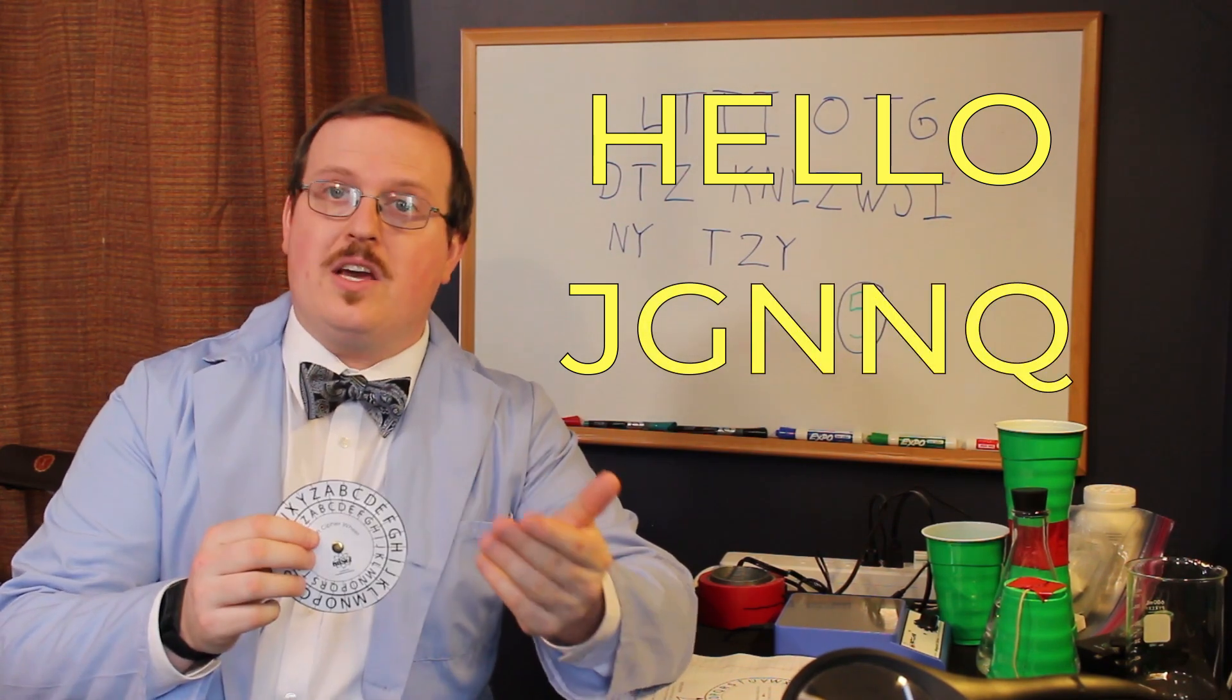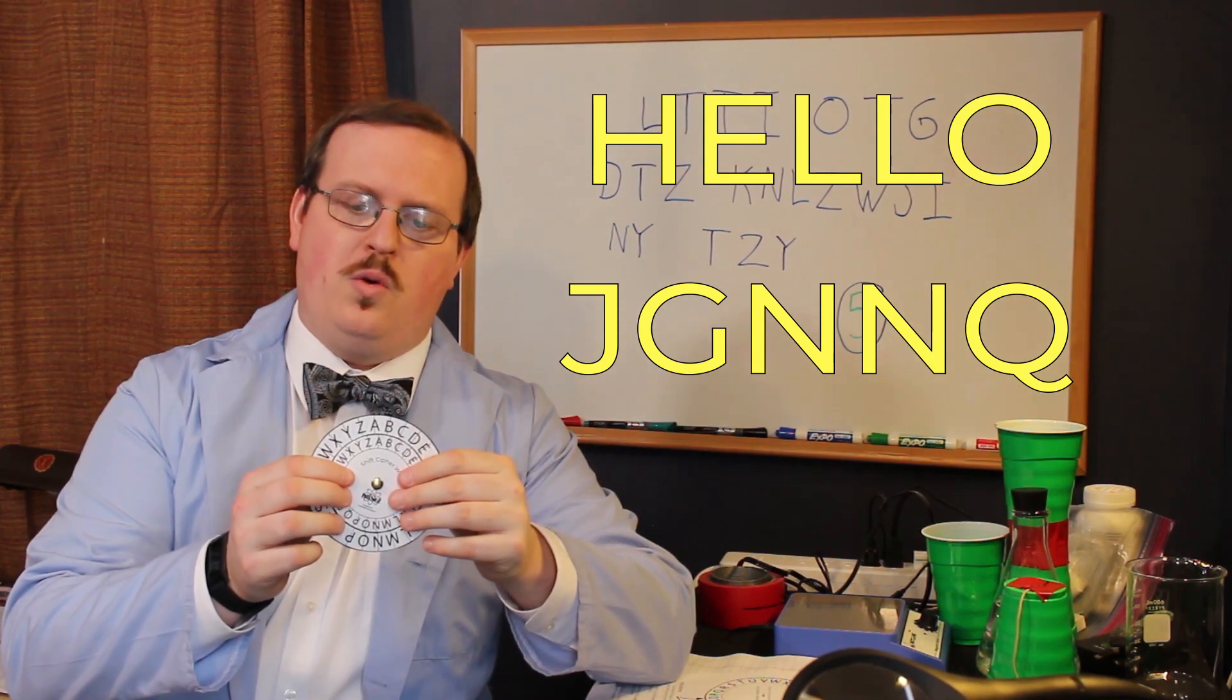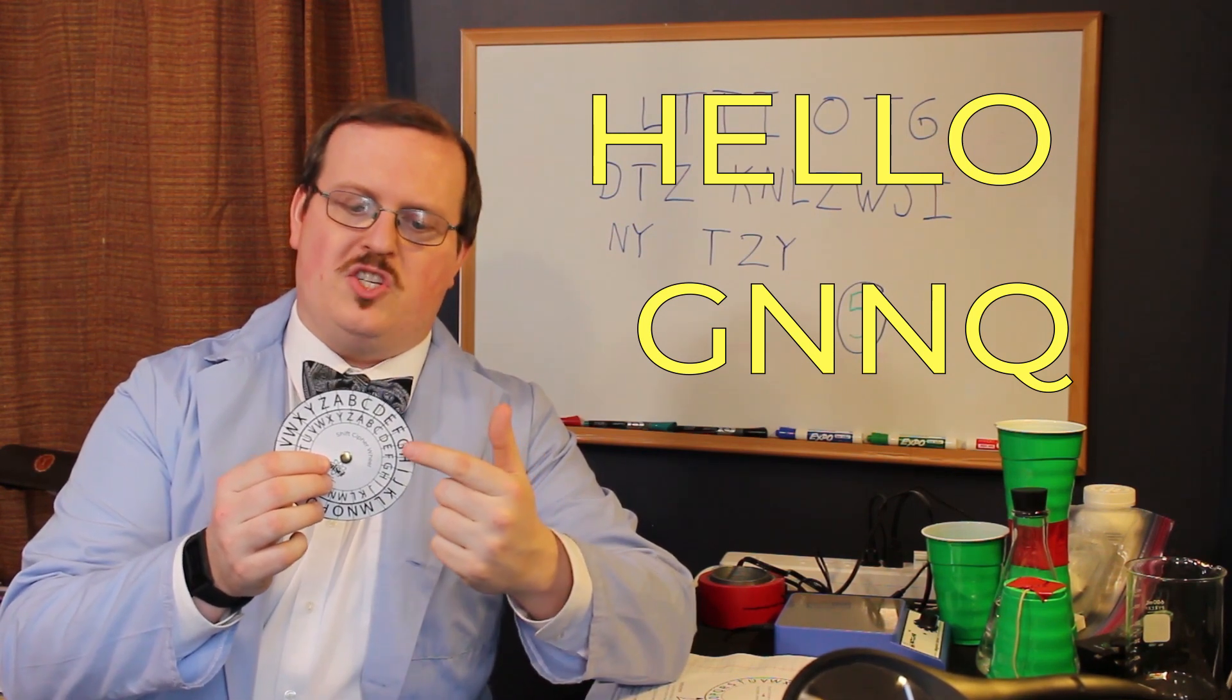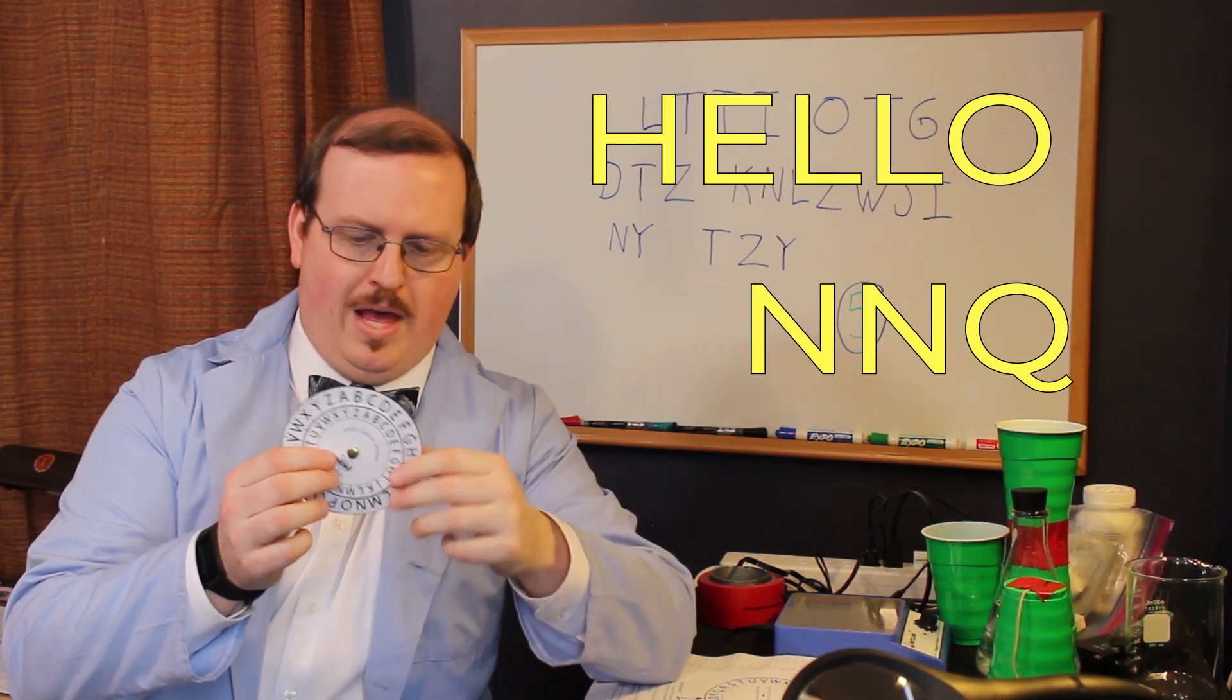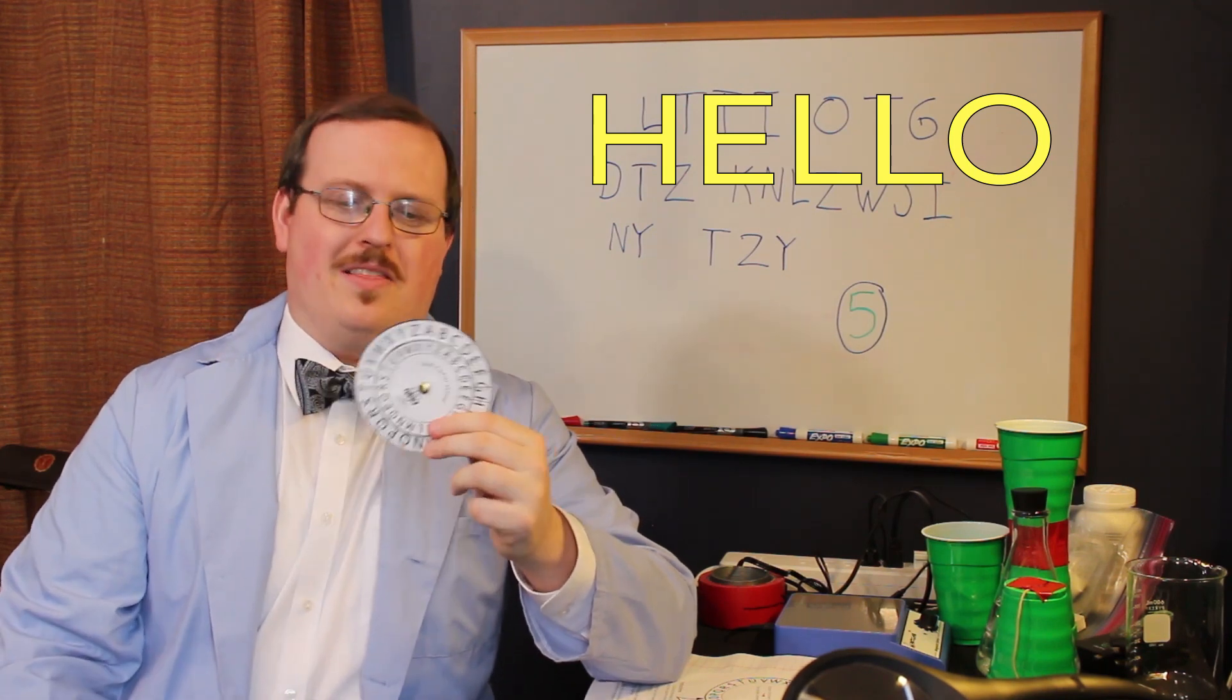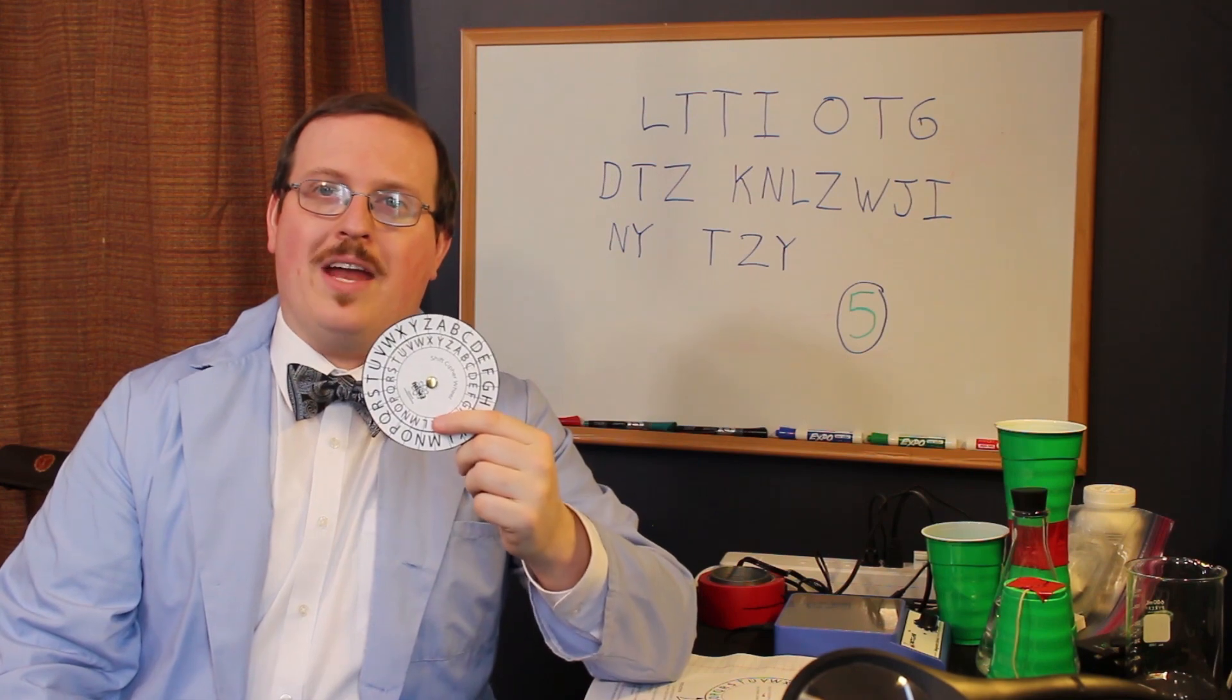When you want to decode the message, well remember, line up your letters again. And this time remember our shift was two, so we're going to go two slots the other direction. So now let's see, our first letter was J, that becomes an H. Our second was G, that becomes an E. Then we have two N's, they become L L, and finally a Q that becomes O. There we go, we have hello. We've managed to lock up our original word using our key, our shift of two, and then we managed to unlock it by using our key in reverse.